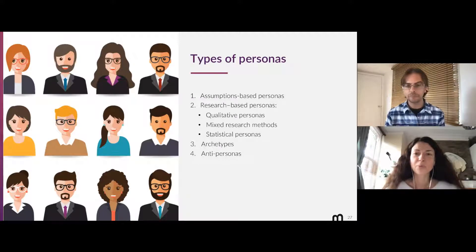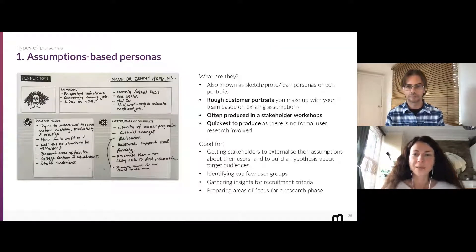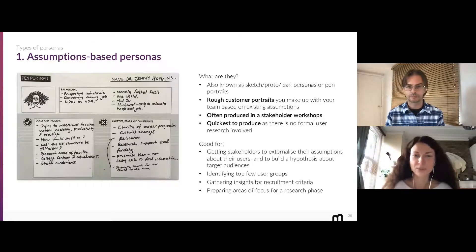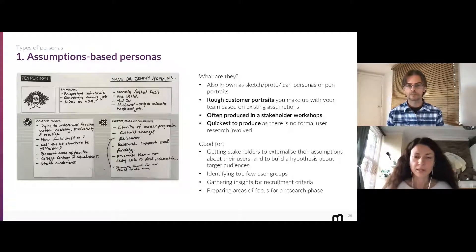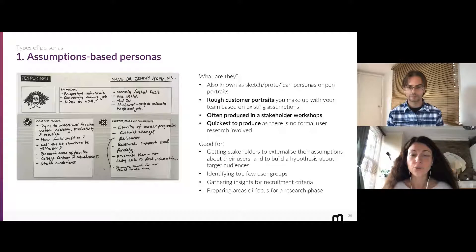There are different types of personas. Assumption-based personas — also known as sketch personas, proto-personas, lean personas, or pen portraits — are rough customer portraits made up together as a team in a workshop format. They are the quickest and cheapest to produce, but really good for externalizing assumptions stakeholders have about users, building hypotheses, identifying new user groups, gathering recruitment criteria insights, and preparing areas of focus for the research phase.